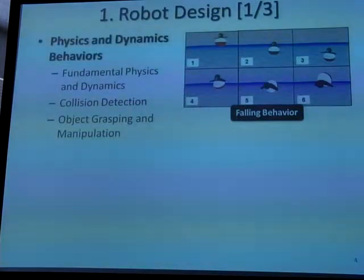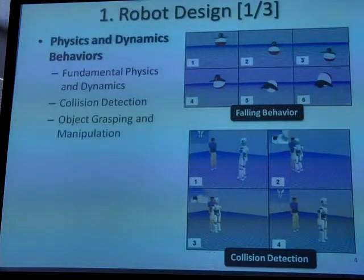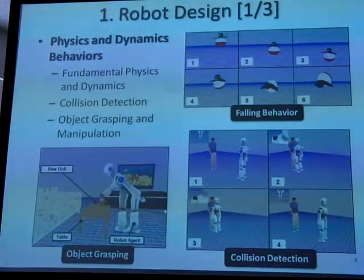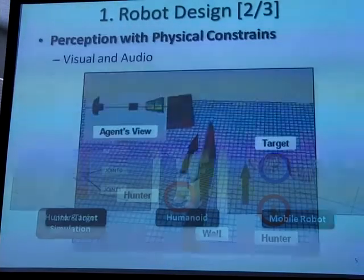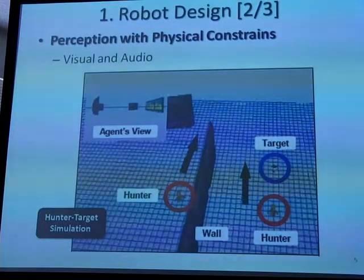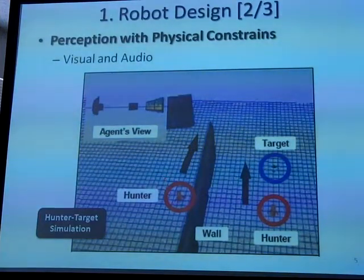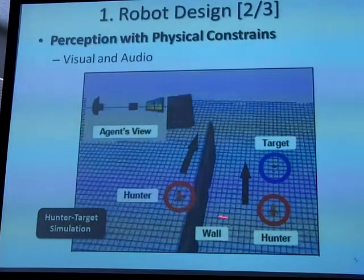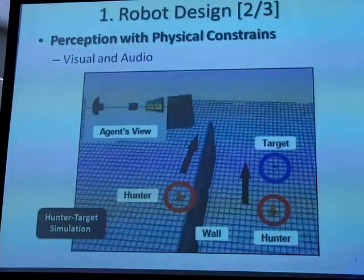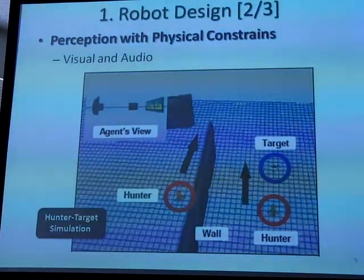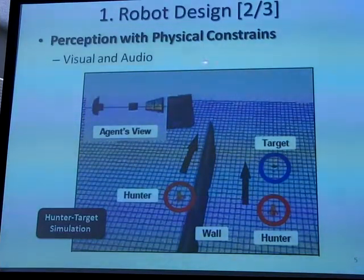We have very basic physics and dynamics and we use ODE for our calculations: freefall, falling behavior, collision detection, and object grasping. Something interesting is that we also focus on visual and audio perception with physical constraints. What does physical constraint in perception mean? For example, in this simulation we have hunter number one and hunter number two — they team up to catch a target. They are communicating with each other through vision and audio, but there is a wall between them so they can't see each other and the voice cannot reach. This is a very important element when talking about real physical constraints at the perception level.